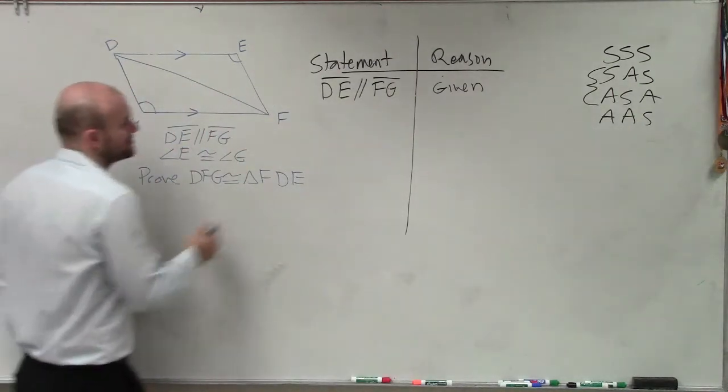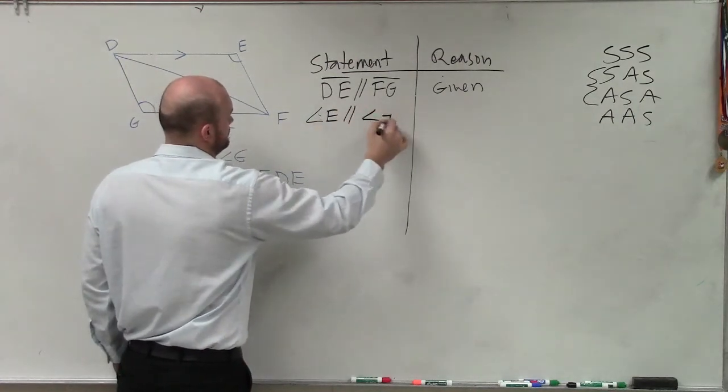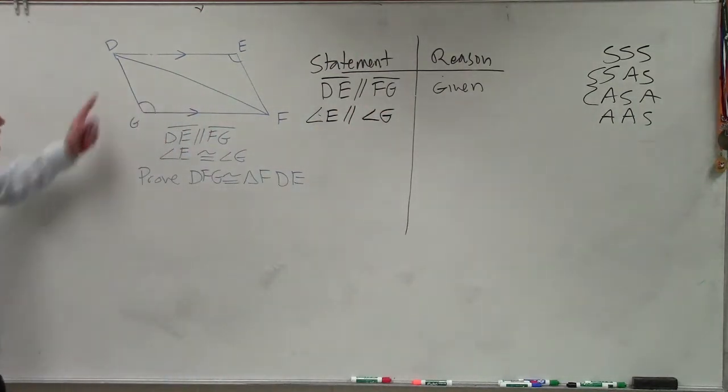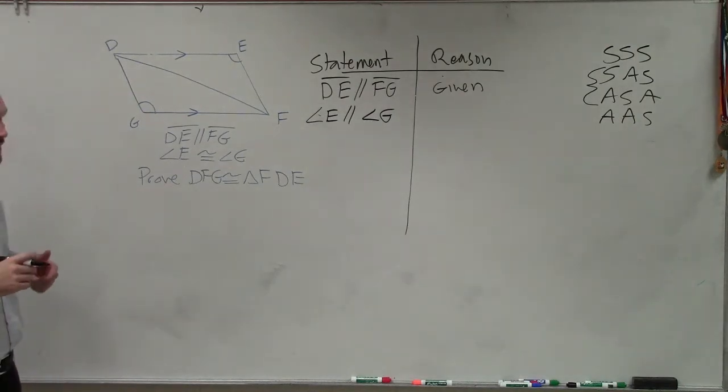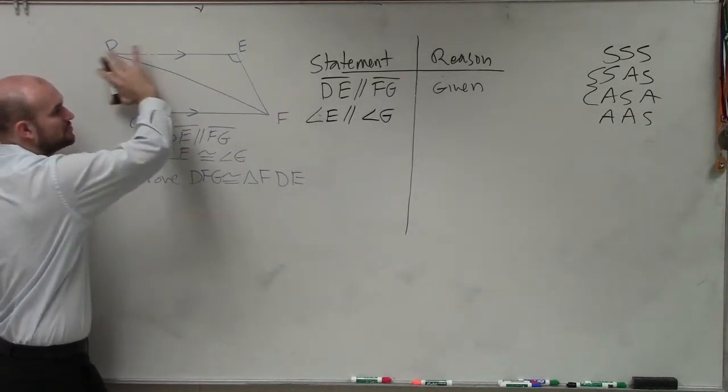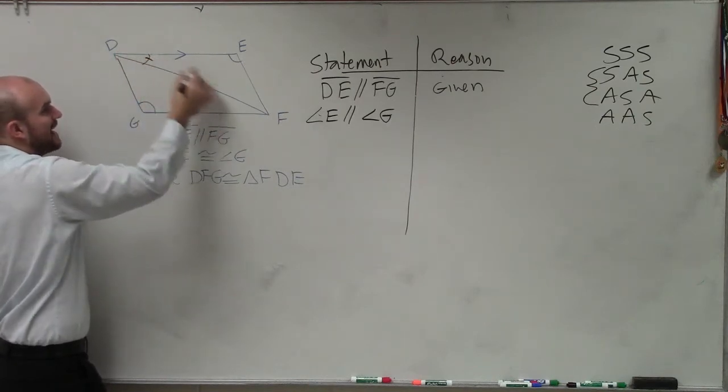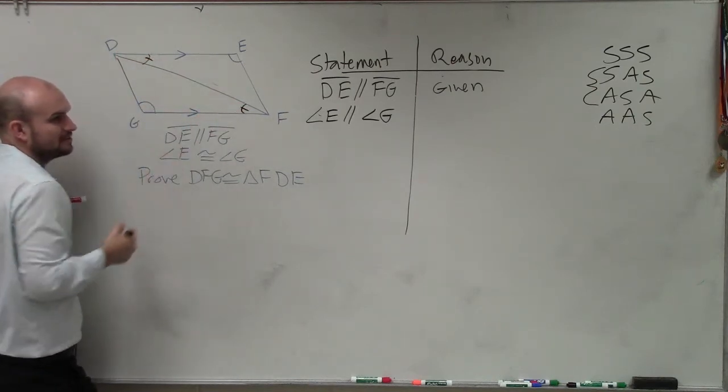Then I have angle E is congruent to angle G. Now, so what about my angle relationships? I have two parallel lines, right? Two parallel lines, and I have this transversal. So that tells me that angle is equal to that angle, right?